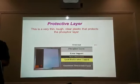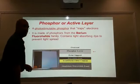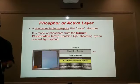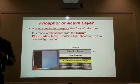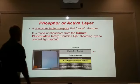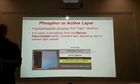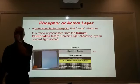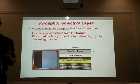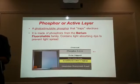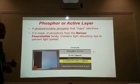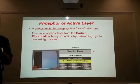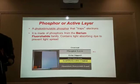The active layer contains the phosphors — the barium fluorohalide. The barium fluorohalide also contains a light-absorbing dye to prevent light spread, which means we can control the diffusion of the light, which controls the speed of the screen. If it has a light-absorbing dye, it makes the detail better — it slows it down a little bit, but insignificantly.